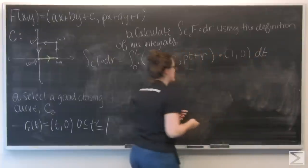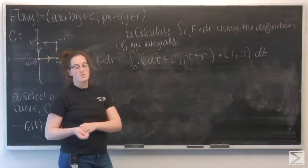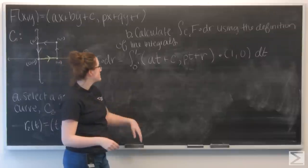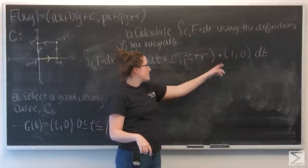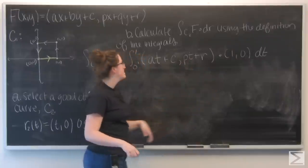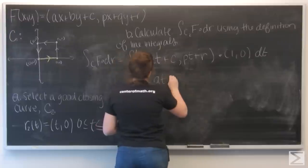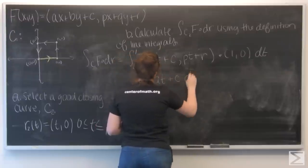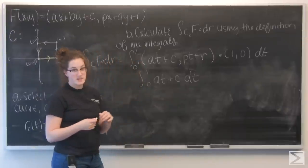Let's go ahead and take this dot product. Remember the dot product is just the product of the i components of the two vectors plus the product of the j components of the two vectors. So I've got (at + c) times 1 plus 0 times (pt + r). So I've got the integral from 0 to 1 of at plus c dt.